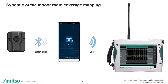To be able to make indoor radio coverage mapping, the synoptic is quite simple as shown here. You need the NEON tracker, an Android device, and a spectrum analyzer. The NEON tracker is paired via Bluetooth to the Android device, and the Android device shares its Wi-Fi hotspot with the spectrum analyzer, which sends its data back to the Android device.